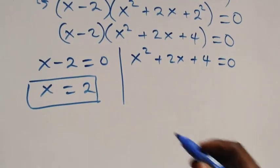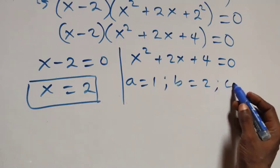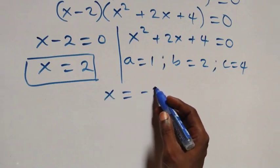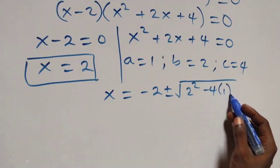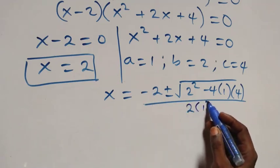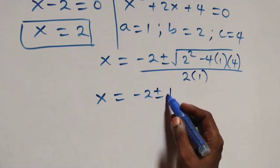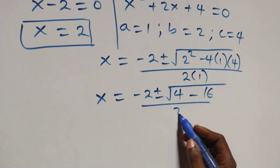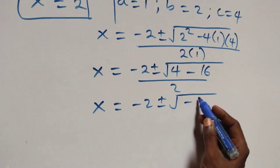Solving the quadratic x² + 2x + 4 = 0, we have a equals 1, b equals 2, c equals 4. Applying the quadratic formula: x equals minus 2 plus or minus square root of 2² minus 4 times 1 times 4, over 2 times 1. This gives x equals minus 2 plus or minus square root of 4 minus 16, that is square root of minus 12, over 2.